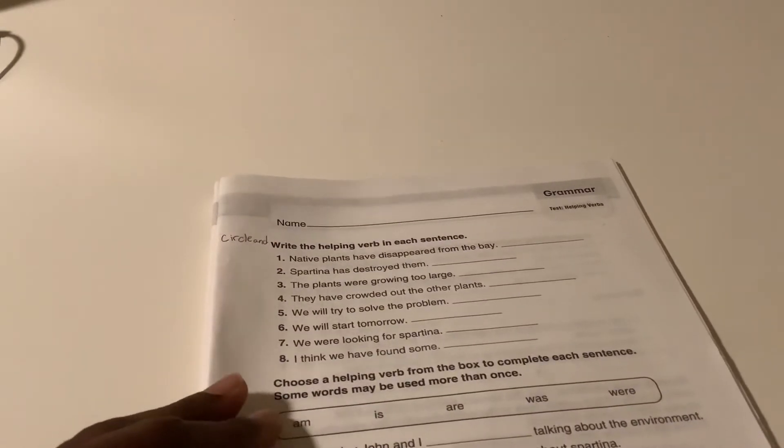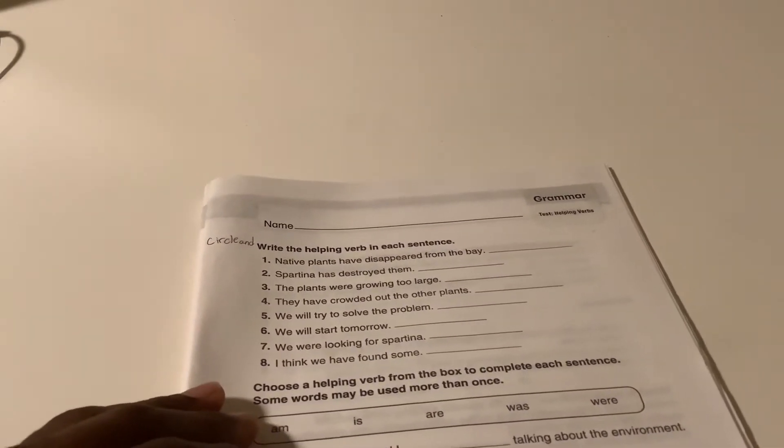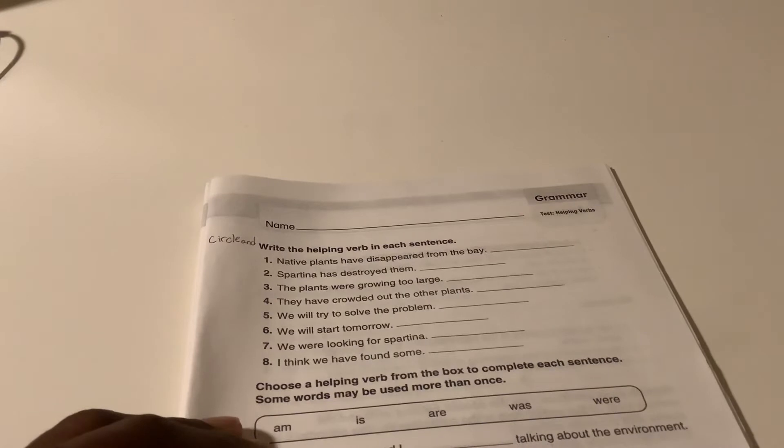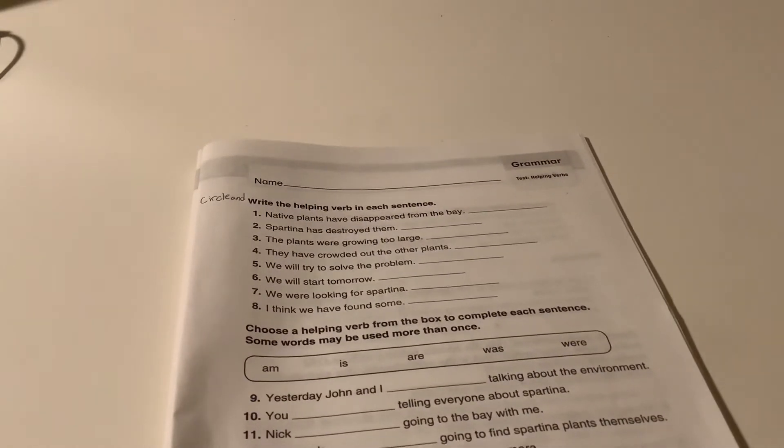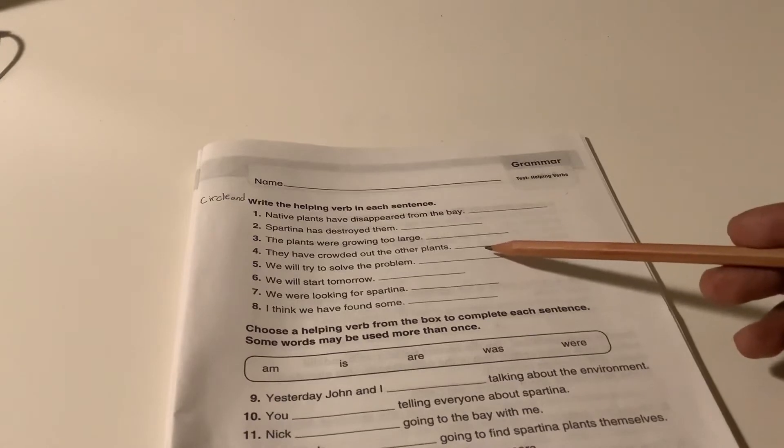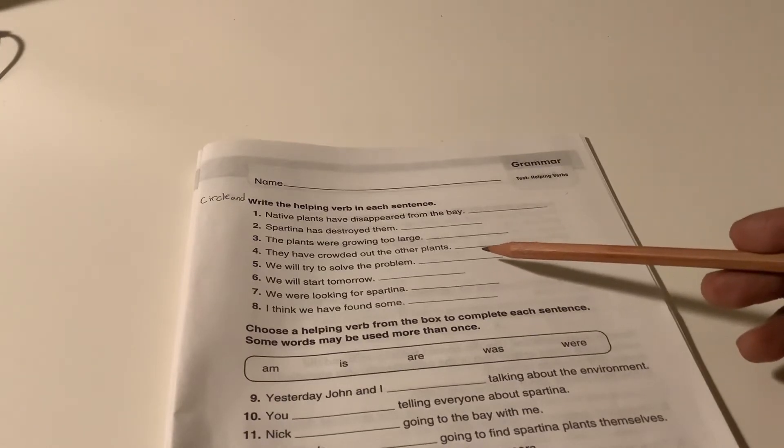Number 1, native plants have disappeared from the bay. 2, Spartina has destroyed them. 3, the plants were growing too large. 4, they have crowded out the other plants.